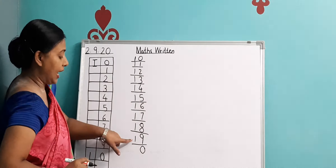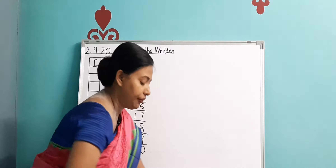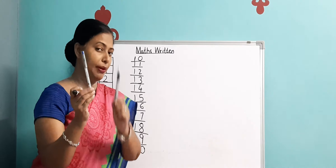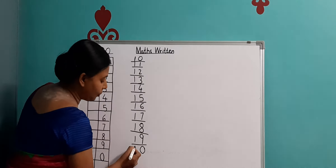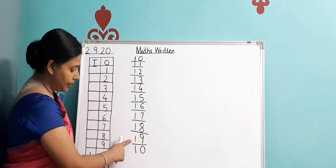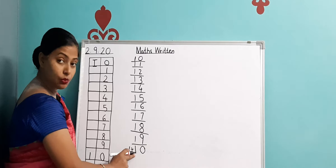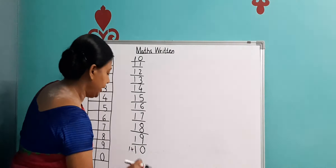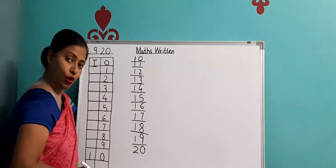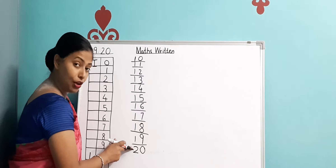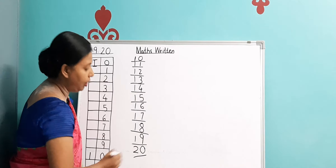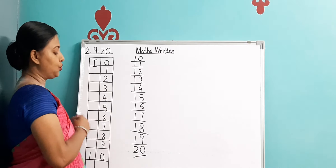Now, if you add — we saw 1 pen plus 1 more. How many pens did it become? 2. Okay, 1 plus 1 becomes 2. So here you will not write 1 because 1 was over here already. This 1 plus 1 will become 2, so here you will write 2. Because you added 1 more, it became 2. Now it has become 2, 0 — twenty.